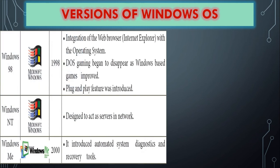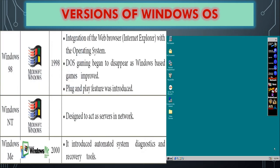Windows 98 was introduced in the year 1998. It introduced web browser integration and games — earlier MS-DOS gaming was common, but in 1998 default game software was installed. The plug and play feature was also introduced in Windows 98.